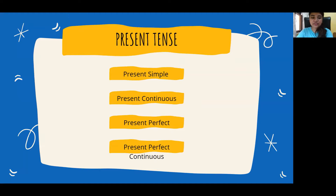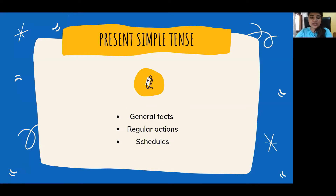Here we have four different present tenses: present simple, present continuous, present perfect, and present perfect continuous. Let's begin with the present simple tense. Present simple tense is a tense we use for general facts, for regular actions, and for schedules — stuff that doesn't change. Like, 'He speaks English' or 'He doesn't speak Spanish.' That's a simple fact.